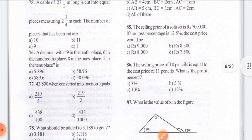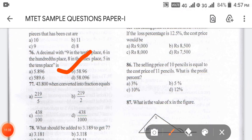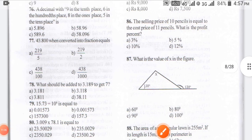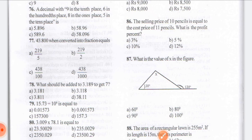Coming to question 76: a decimal with 9 in the tenths place, 6 in the hundredths place, 8 in the ones place, and 5 in the tens place. When we put it in place, the answer is coming as option B for 76 — that is 43.96 when expressed as a decimal.